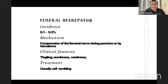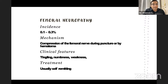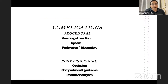Femoral neuropathy results from compression by complications such as hematoma, pseudoaneurysm, or AV fistula. Incidence is less than 0.3%. It is caused by femoral nerve compression by a hematoma. Clinical features include tingling, numbness, and weakness. It is usually self-limiting.